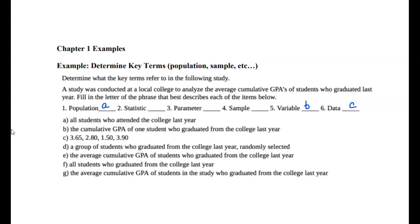Part D says: a group of students who graduated from the college last year, randomly selected. This is a group from the population of interest. It's best to select them randomly because then you get a representative sample. So this would be your sample. The population is the entire group of interest, and the sample is a section of that entire population selected randomly.